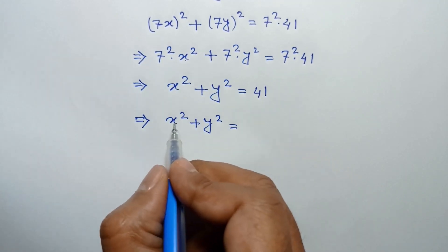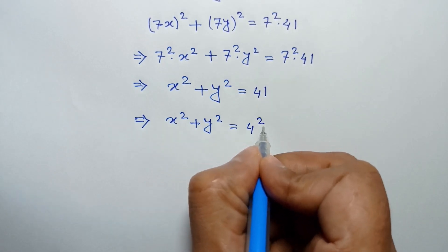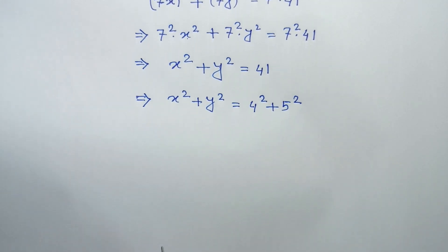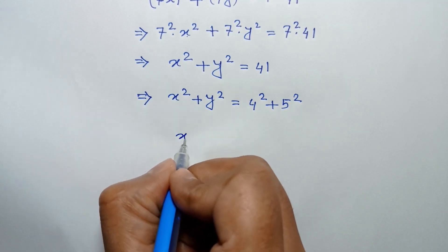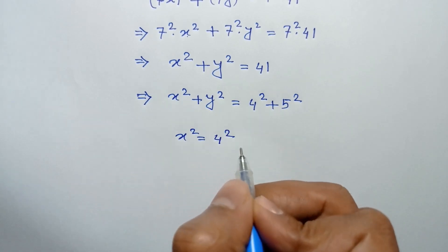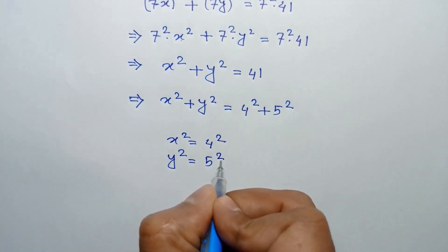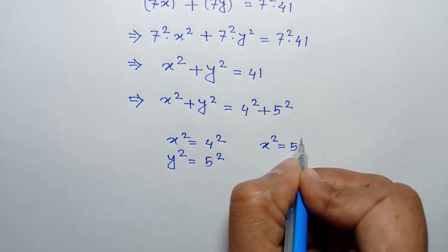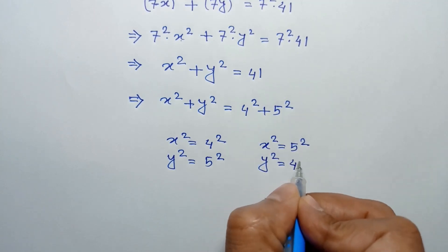Now x squared plus y squared equals 41 can be expressed as the sum of two square numbers in only one way: 4 squared plus 5 squared. Comparing both sides, x squared equals 4 squared and y squared equals 5 squared, or x squared equals 5 squared and y squared equals 4 squared.